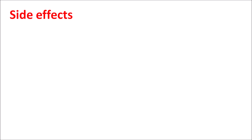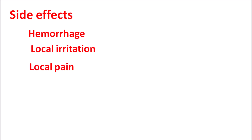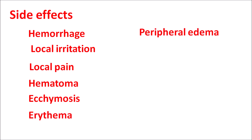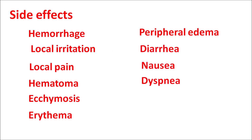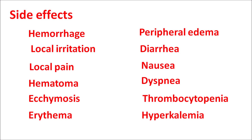The most important side effect is hemorrhage, so this drug should be given carefully in patients with increased hemorrhage risk or those who have had recent surgeries. Enoxaparin can also produce local reactions at the injection site including local irritation, pain, hematoma, ecchymosis (pooling of blood under the skin), and erythema. Other side effects include peripheral edema, diarrhea, nausea, dyspnea, thrombocytopenia, and hyperkalemia. Potassium levels and liver enzymes (ALT and AST) should be monitored.